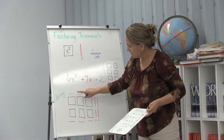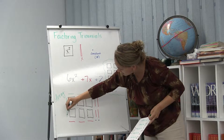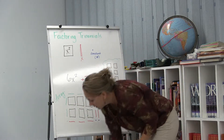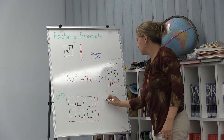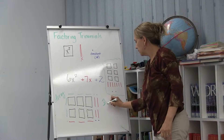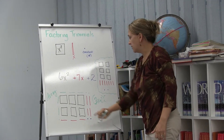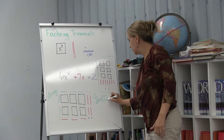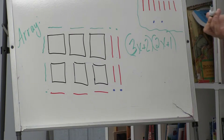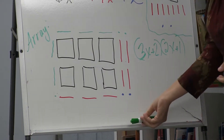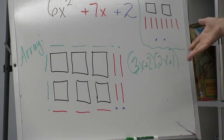So I have an x, an x, an x, an x, and 2 units on one side. And on this side, I have an x, an x, and 1 unit. And that tells me that the answer to my problem is 3x's plus 2 — that's one factor. My other factor is 2x's plus 1. And that's how to factor a trinomial. We're able to use the arrays that they learned, the squares that they learned, to factor the trinomials.